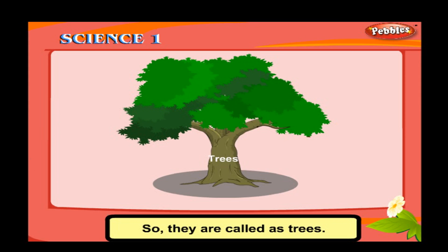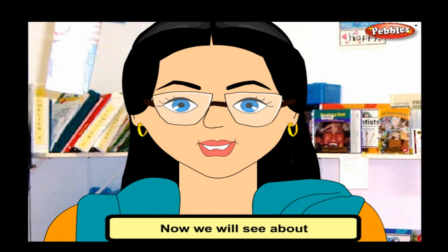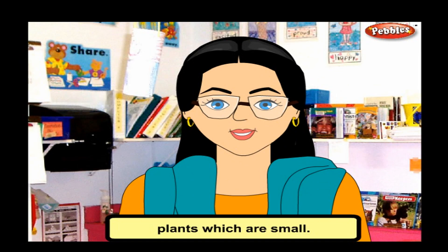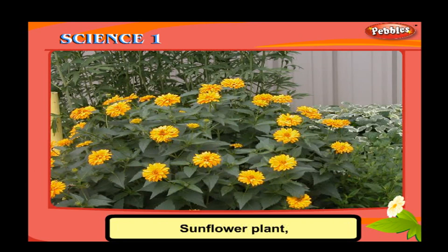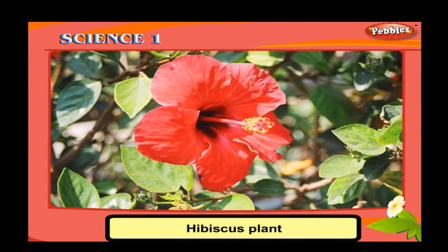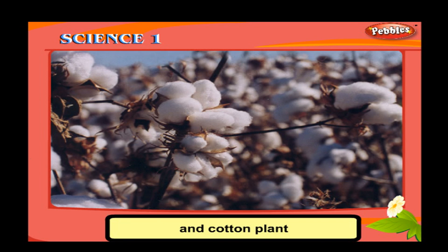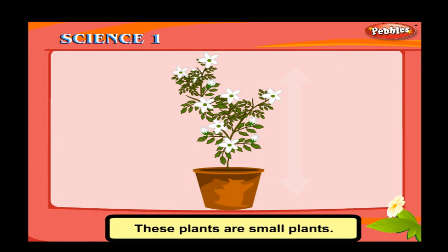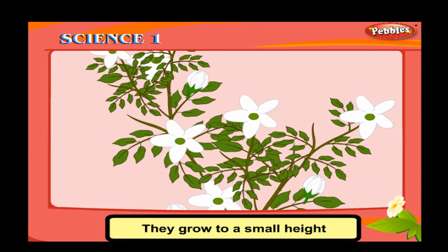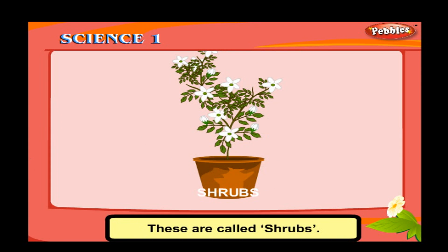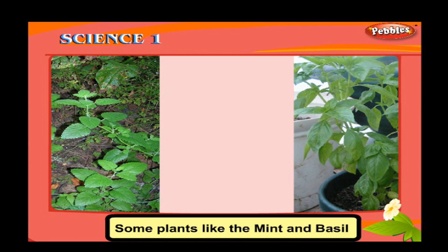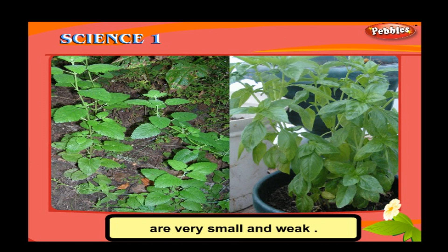So they are called trees. Now we will see about plants which are small. See these plants: rose plant, sunflower plant, hibiscus plant, and cotton plant. These plants are small and grow to a small height, and their stems are not very strong. These are called shrubs. Some plants like mint and basil are very small and weak. These are called herbs.